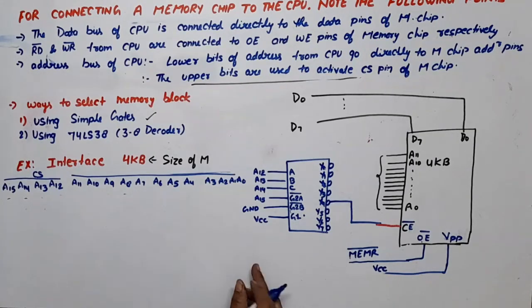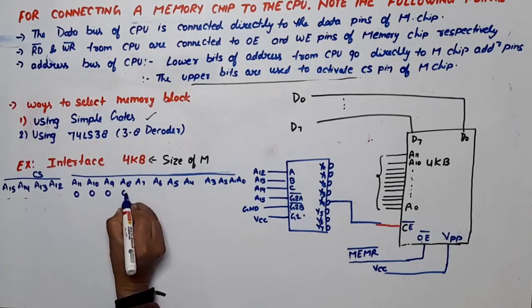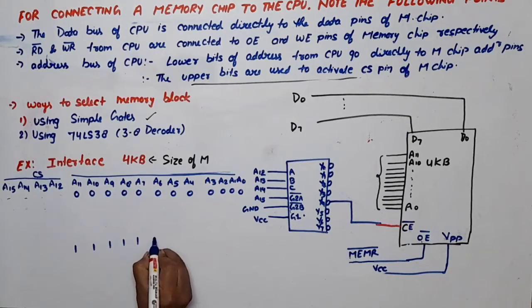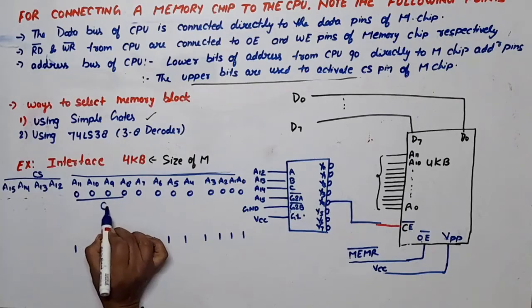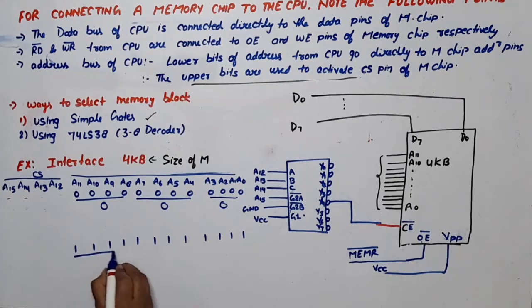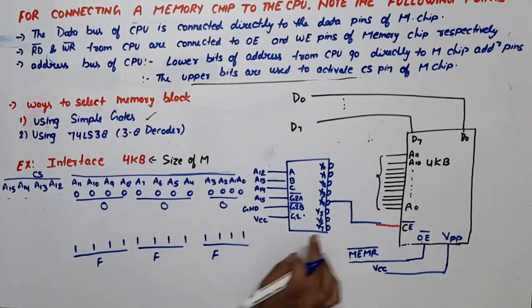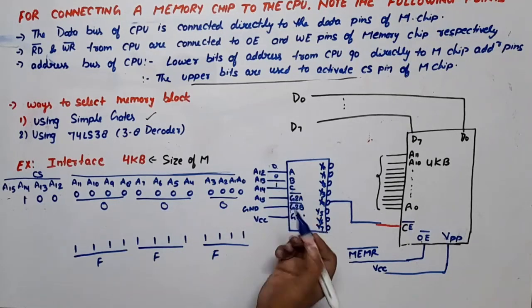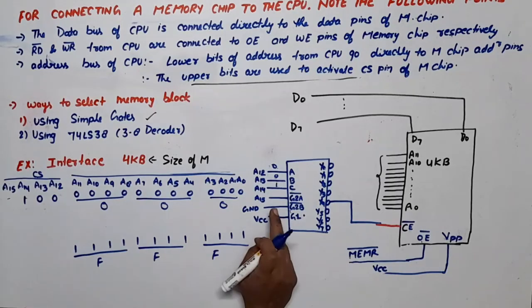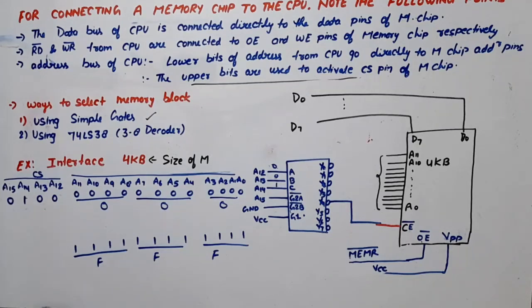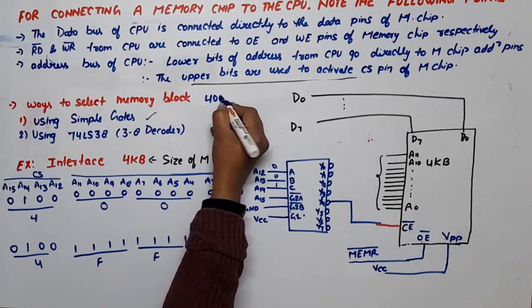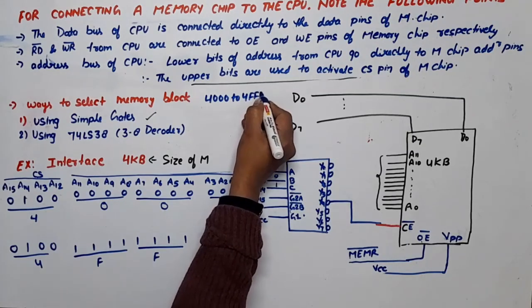With this decoder connection, the minimum address value has all 12 lower bits = 0, and the maximum has all 12 bits = 1. For Y4 to be selected, the binary value at inputs C,B,A must be 1,0,0 (decimal 4). So A14=1, A13=0, A12=0, and A15=0 (connected to G2B bar). This gives upper nibble value of 4. The address range for this connection is 4000H to 4FFFH.